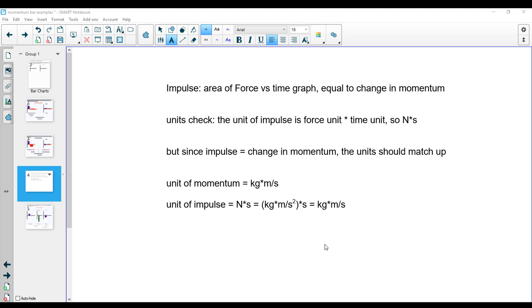Now, if those are equal, the impulse and the change in momentum, then the units should also be equal. Our unit for impulse, if it's the area of a force versus time graph, then that area is going to have units of force times time. So Newton's times seconds in this case.